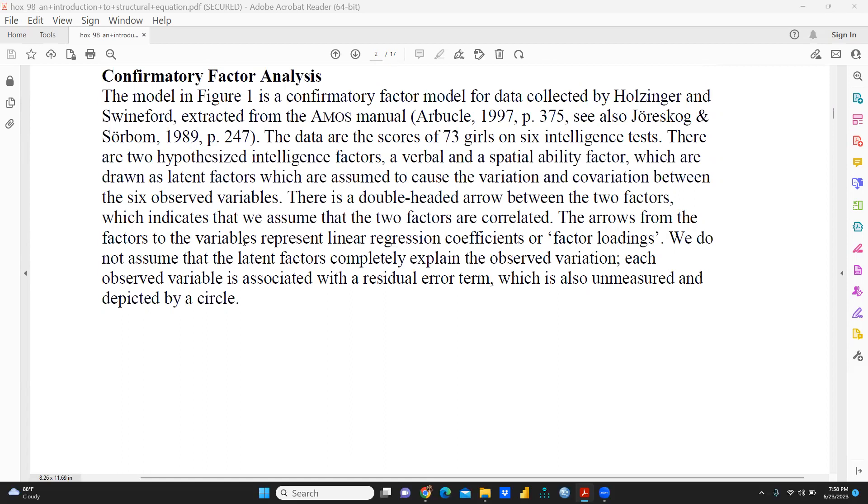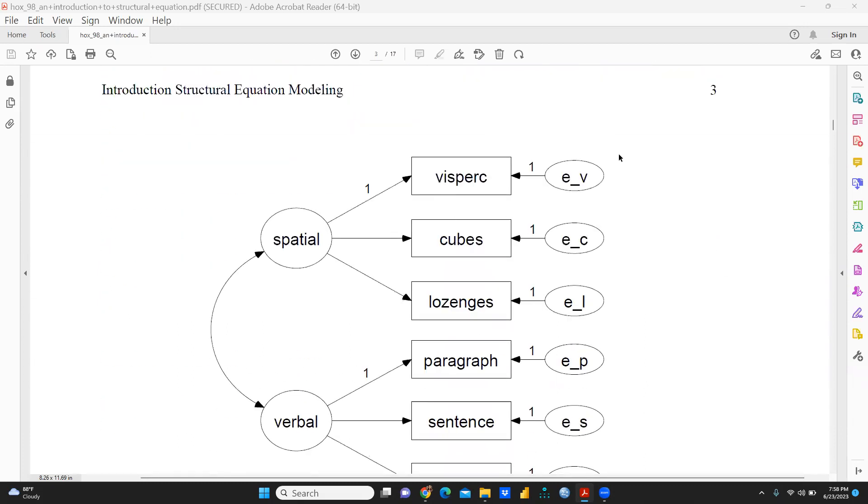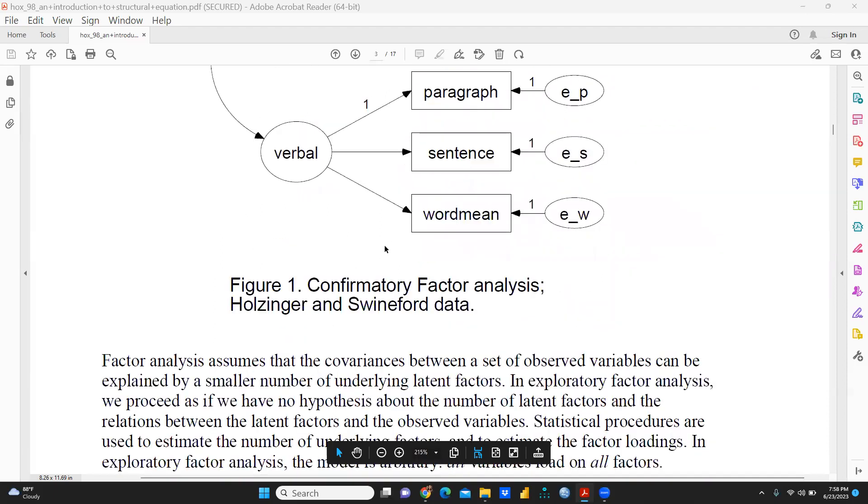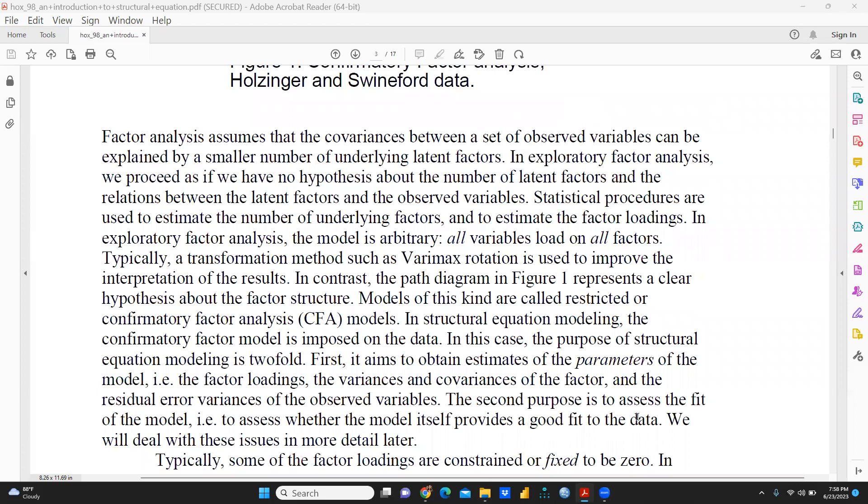The arrows from the factors to the variables represent linear regression coefficients or factor loadings. We do not assume that the latent factor completely explains the observed variation. Each observed variable is stated with a residual error term, which is also unmeasured and depicted by a circle. So now you can see these are the error terms. These are constructs, and this construct is defined by 1, 2, 3—these three items. The same with here. This one is another variable, and these are the residual terms, residuals.